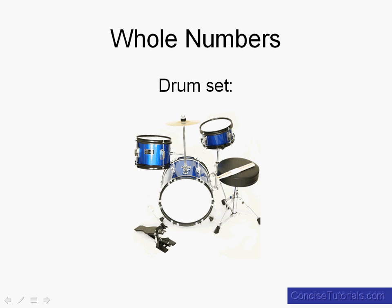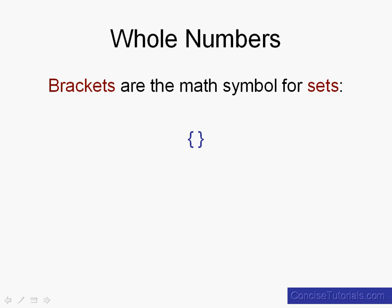Now in math when we're talking about sets we use special symbols to show that this group of things go together and those are brackets. Brackets are the math symbols that we use for sets. So if we wanted to talk about a drum set in math notation, within the brackets we would put the elements of this set of things. So a drum set would be within brackets the bass drum, tom drum, snare drum, cymbal, throne, bass pedal and drumsticks.